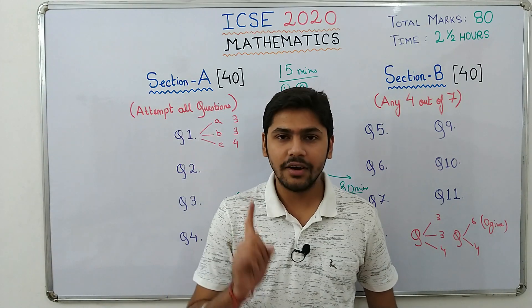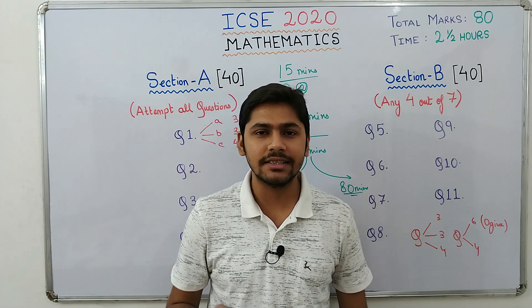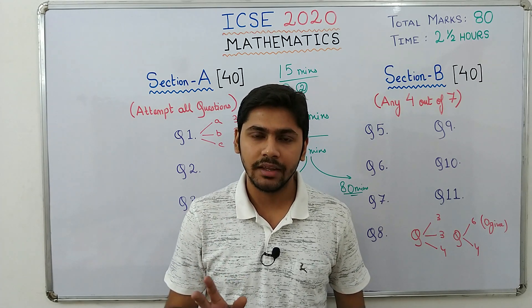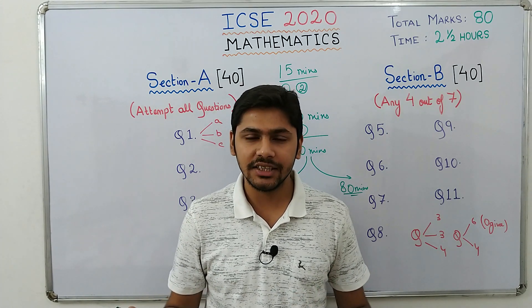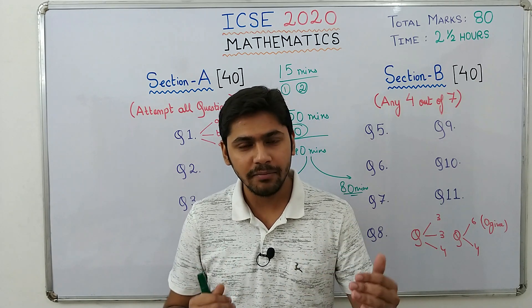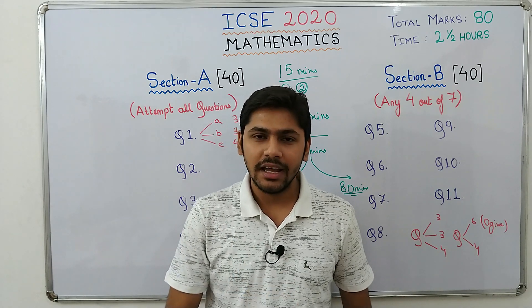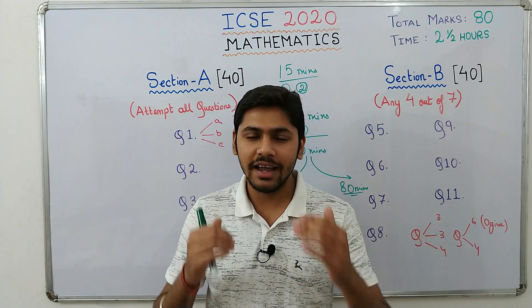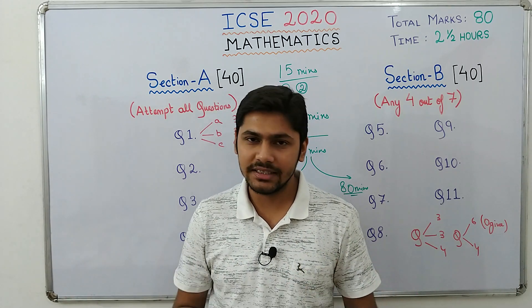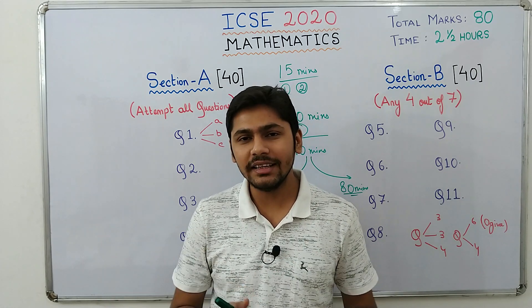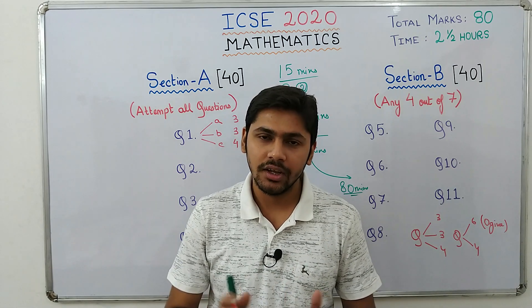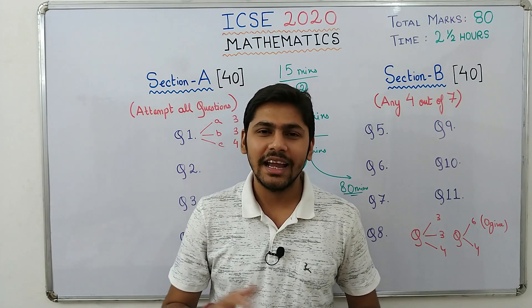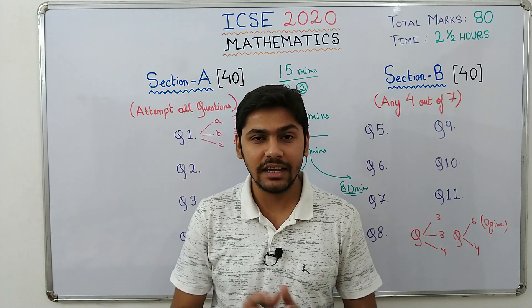The first tip for every mathematics exam is time management, already covered. The second tip: whenever you do a big calculation — a long division or multiplication — check that calculation once more right then and there. If you have made any error you can correct it immediately. A mistake in a calculation can throw off the whole sum, so catching it early saves a lot of time. It only takes 15 to 20 seconds to recheck.